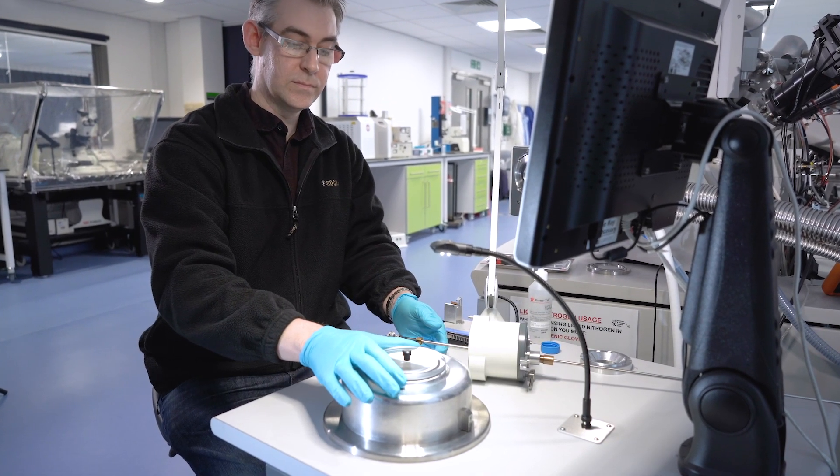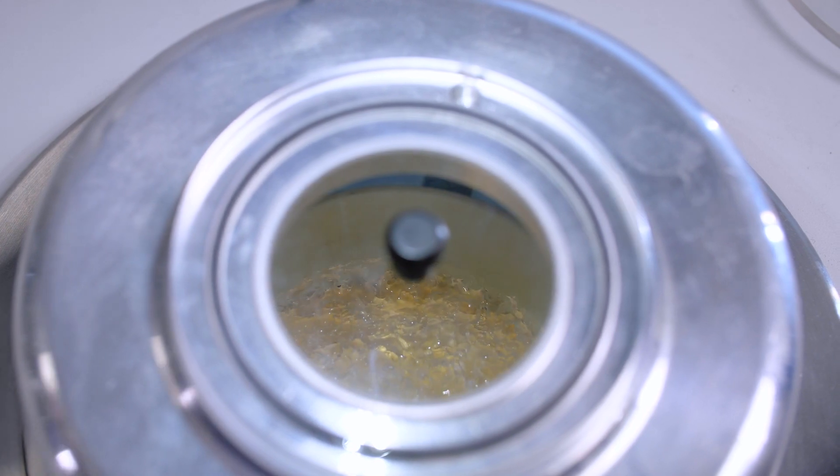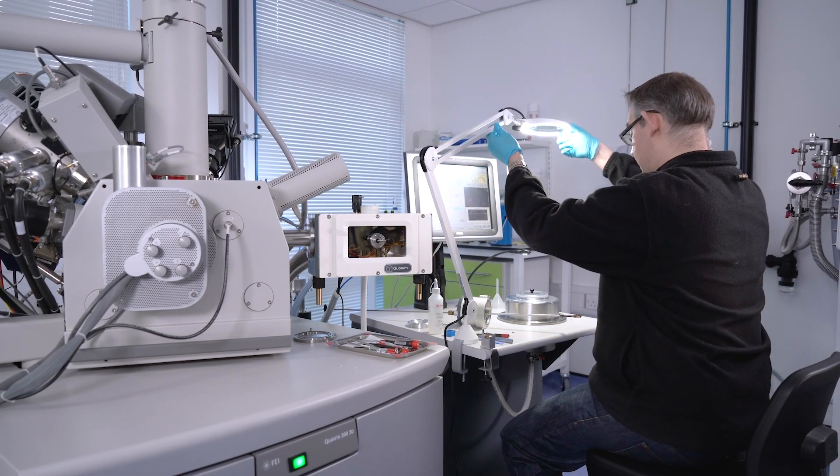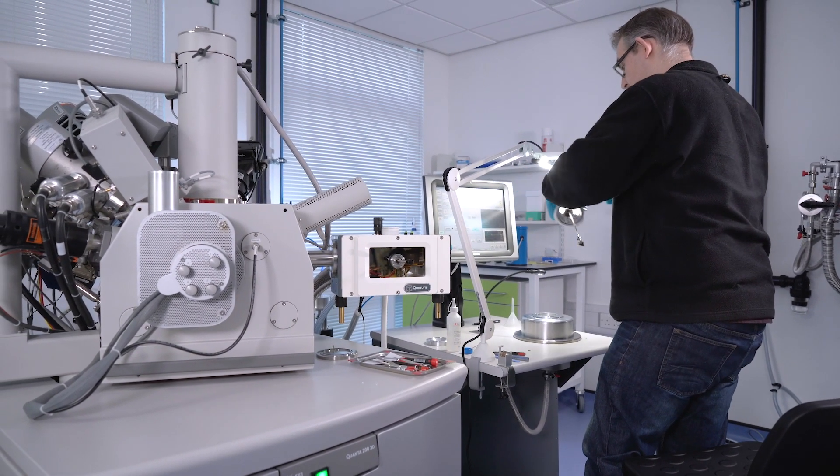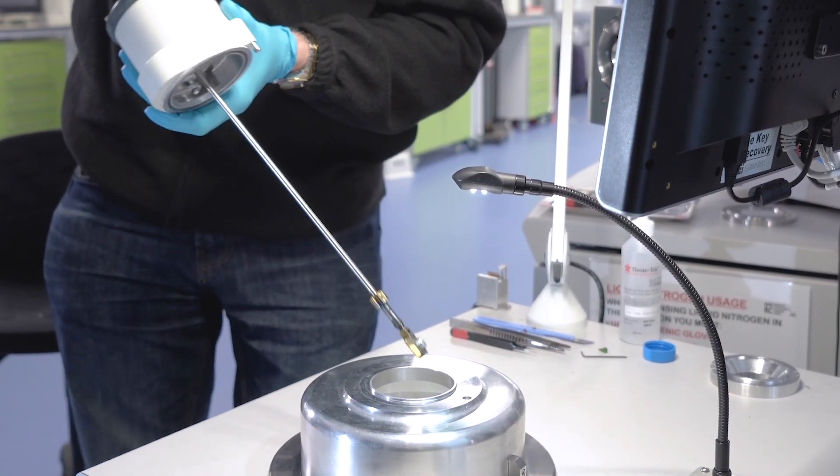He then stops pumping in the slush and vents it so the slush turns back to a liquid. And now we will plunge the sample rapidly and smoothly into the slush nitrogen and wait for the sample to finish cooling.